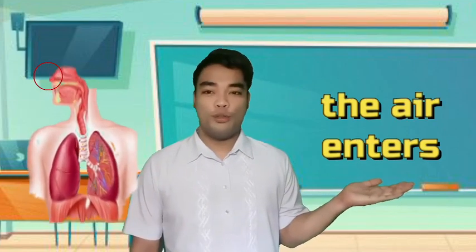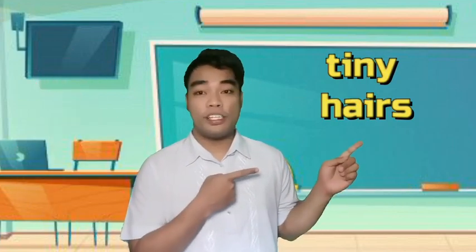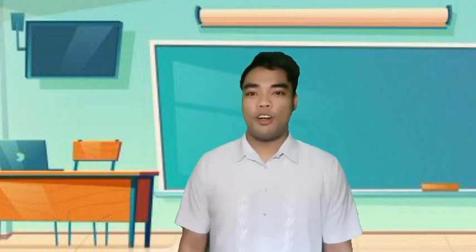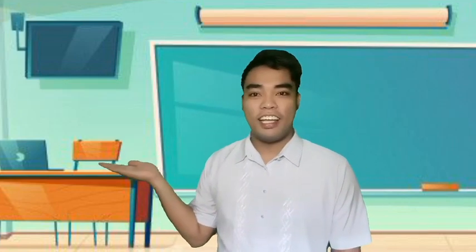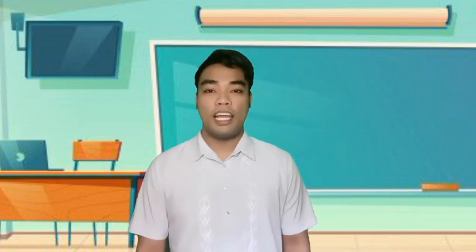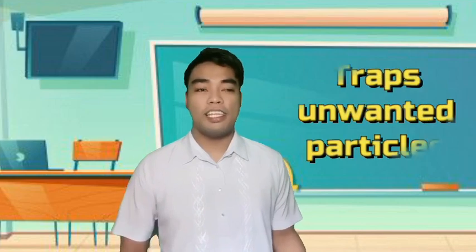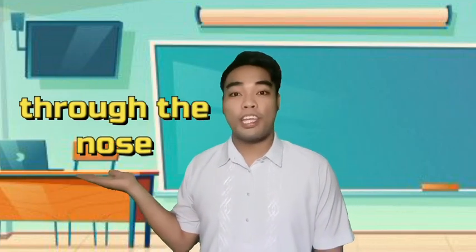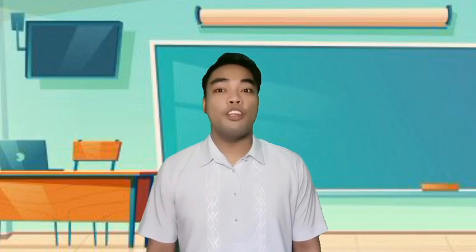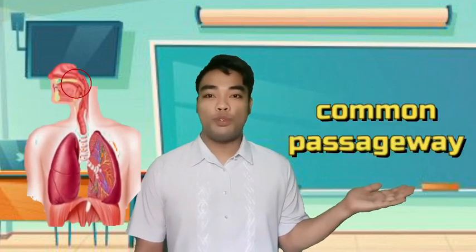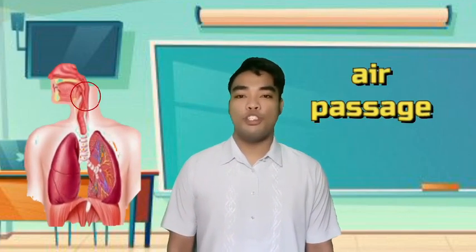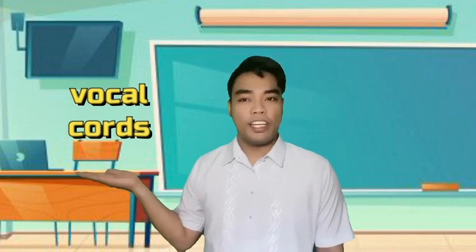The nose is the structure in which air enters. Have you ever wondered that inside our nose there are tiny hairs present? Those are what we call epithelial cilia, or commonly called nose hair, which traps unwanted particles that enter our nose when we inhale. The nasal cavity serves as the channel for airflow through the nose, where the air is warmed, cleaned, and moistened. The pharynx is the common passageway for both food and air. The larynx serves as an air passage to the lungs and holds the vocal cords.